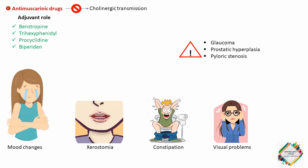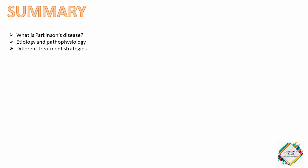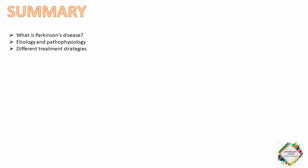That is all about the treatment of Parkinson's disease. In this video we have learned about what Parkinson's disease is, its possible etiology and pathophysiology, and the different treatment strategies used — which include levodopa and carbidopa, MAO inhibitors, COMT inhibitors, dopamine receptor agonists, amantadine and antimuscarinic agents.